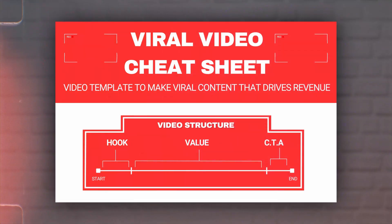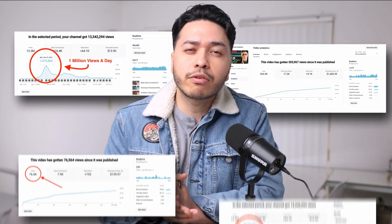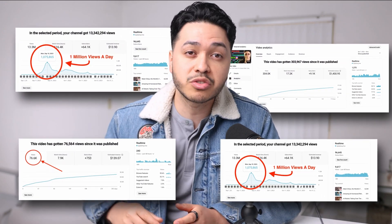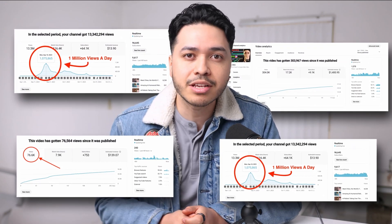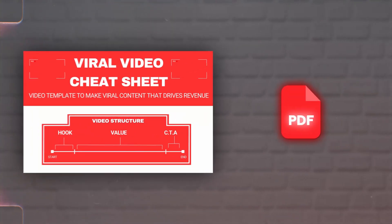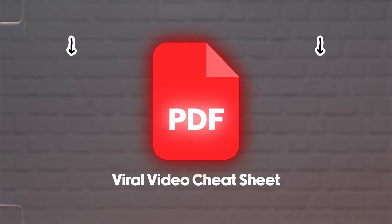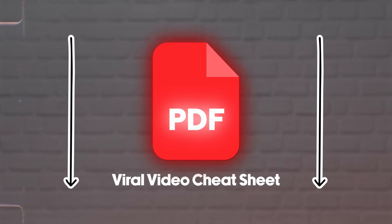But if you actually want to go consistently viral — not just grab attention but keep it and convert it — you need more than just a flashy opening. That's why I put together a free viral video cheat sheet that breaks down everything I learned from generating over 23 million views and collecting over 100,000 subscribers on just one of my channels. I packed it all into an actionable PDF. Grab it for free — the link will be in the description down below.